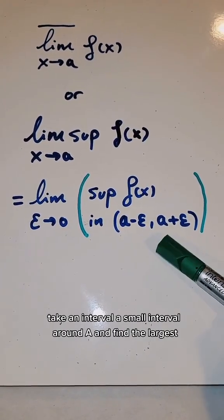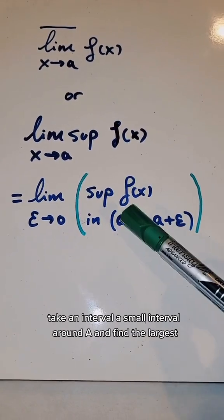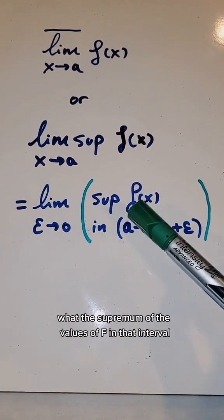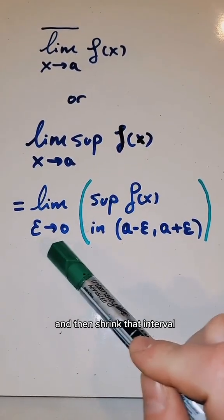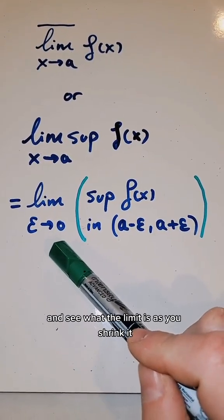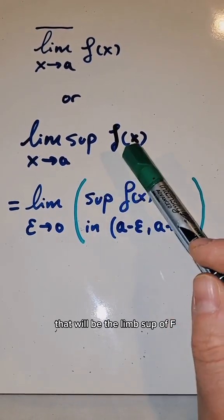Take an interval, a small interval around a, and find the largest, the supremum of the values of f in that interval, and then shrink that interval and see what the limit is as you shrink it. That will be the limsup of f.